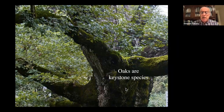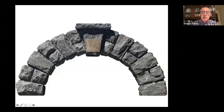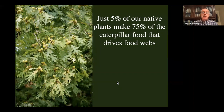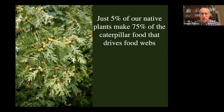That's why I call oaks keystone species. Just as the keystone is the stone in the middle of a Roman arch — take it out and the arch collapses — keystone plants, if removed from the local food web, cause the food web to collapse. Just 5% of our native plants make 75% of the caterpillar food that drives our food webs. 14% make 90% of the caterpillar food. Oaks are the two-by-fours holding up your ecological house.